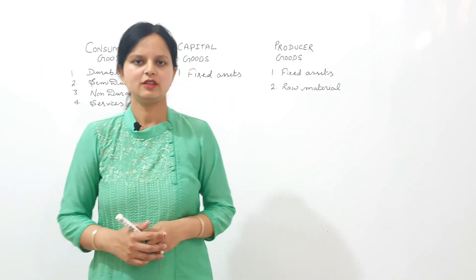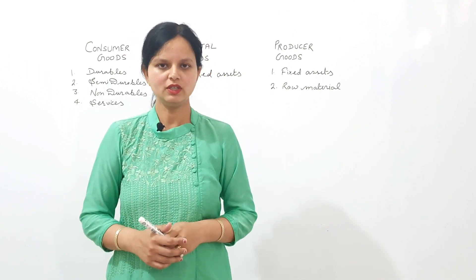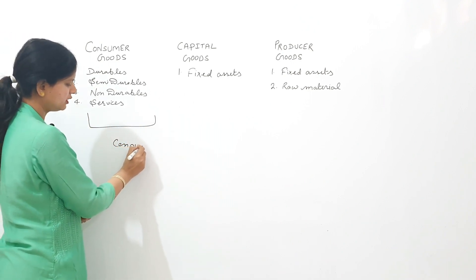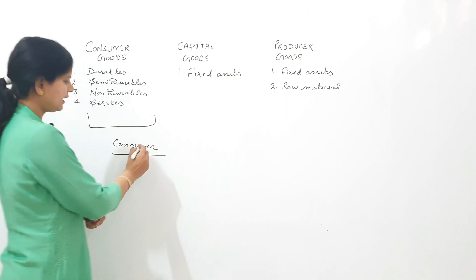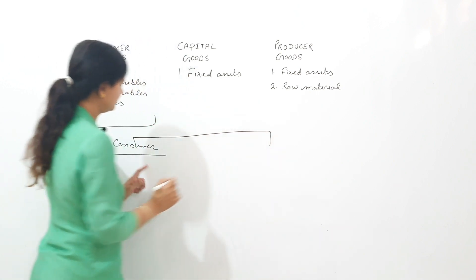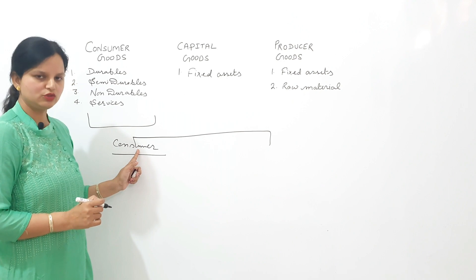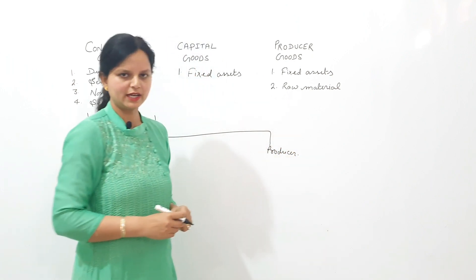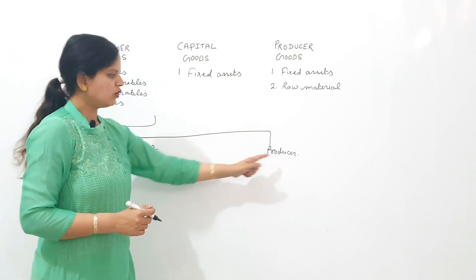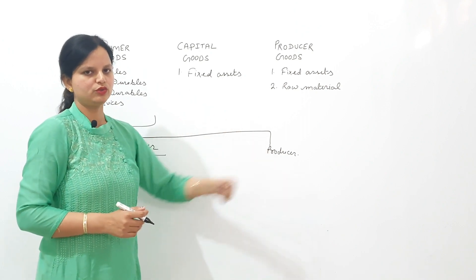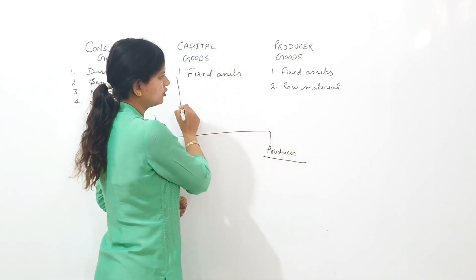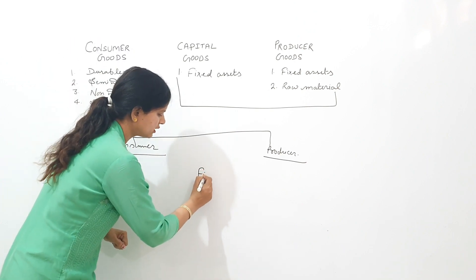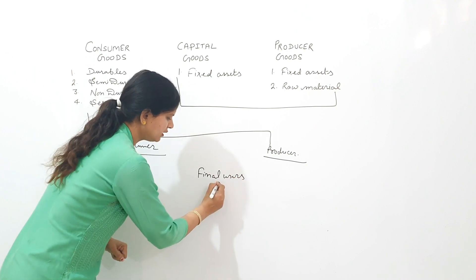Now the question arises: who consumes consumer goods, and who consumes producer good and capital good? The answer is: consumers purchase consumer goods, and we all are consumers. Some of us are producers also. All producers are consumers too, but all consumers are not producers. Producers purchase capital good and producer good for production. So these two — consumer and producer — are the final users, or end users.